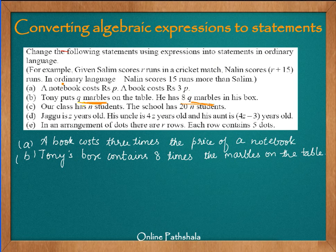Statement C says our class has n students and the school has 20n students. This simply means that the total number of students in the school is 20 times the number of students in our class.